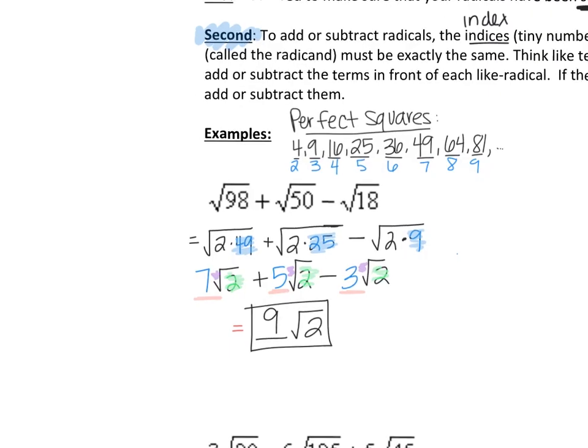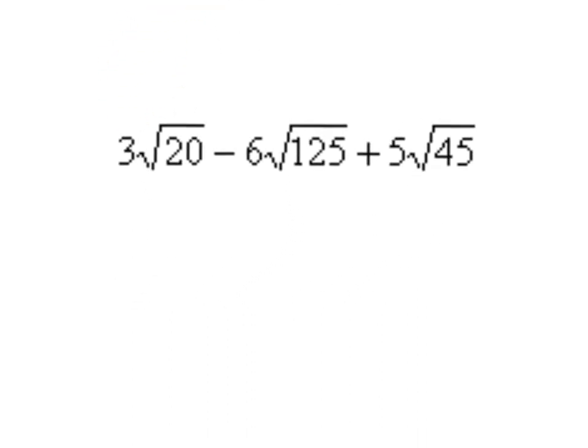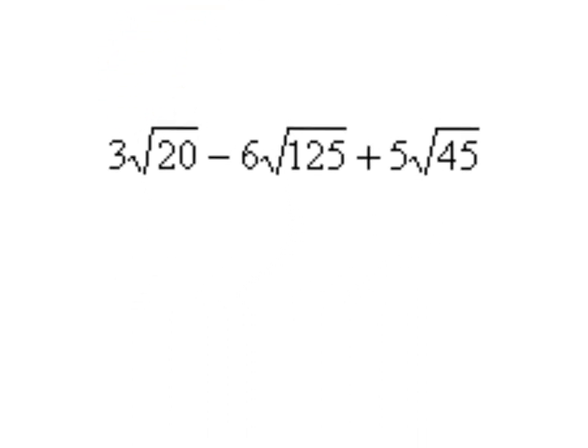Our second example is a little more fun. I can tell because I see this thing right here. I've never done this problem, so we'll see. We're going to see if we can simplify these, so I'm going to go back to y equals, type in 20. Two numbers that multiply to 20 where one has to be a perfect square — I see 2 times 10, neither are perfect squares; 4 times 5, that is a perfect square. So we're going to rewrite this as 3 square root of 4 times 5. Minus 6.